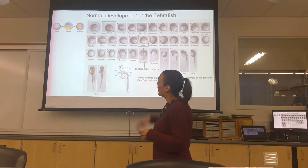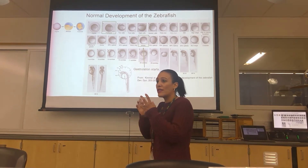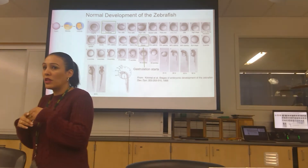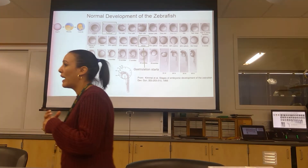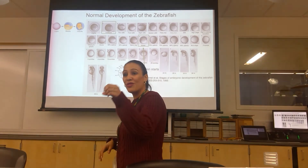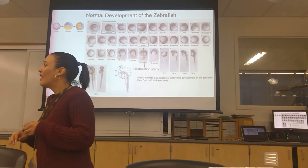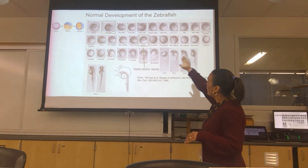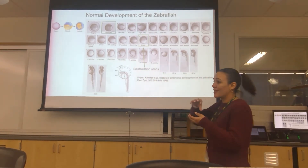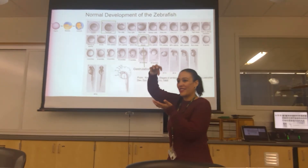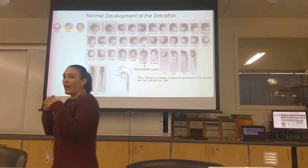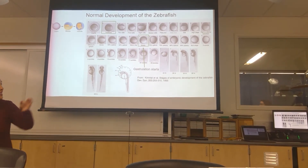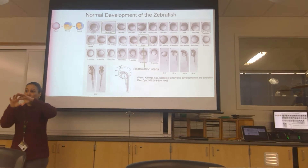Going from zygote to fertilized, you'll notice a change in how it looks — from a great ball with no visible differences to having a little bubble at the top. That bubble is what becomes the fish; it's the one cell that keeps dividing to become the fish. As you step through from fertilized to two-cell, you see that one cell became two. At those early stages of development, you can very clearly see the individual cells, which is kind of neat. As you move through early development, the cells seem to pile up higher and higher.